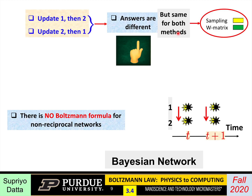The first point to make is that there is no Boltzmann formula, but if you use the sampling method or the transition matrix method, they both give the same answer. However, the answer is different depending on the sequence of updating. With Boltzmann networks, it doesn't matter which way you update — it could be one then two, or two then one. But now, the answers will be different.